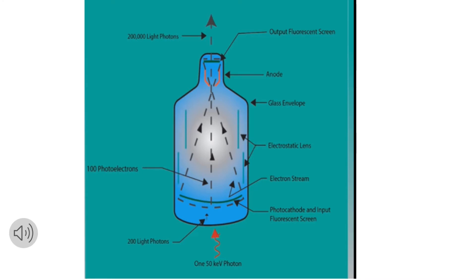Next we have these electrostatic lenses. They focus those electrons and push them to a focal point. This is where the brightness gain is taking place — this is where the money meets the road in fluoroscopy. The next part is the anode. It's accelerating, but remember, these electrons don't strike the anode. They pass by it and strike the output phosphor at the end, which produces light again.